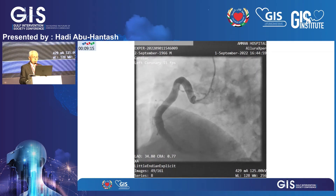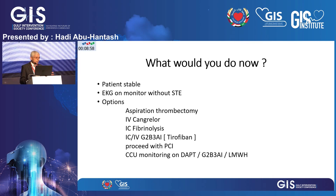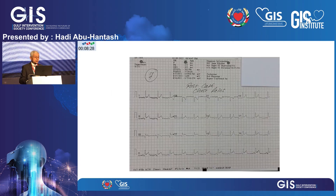At this point in the cath lab, the patient was stable with no more chest pain and the ST elevation had abated. I was weighing options: should I do aspiration thrombectomy? If I have IV cangrelor, should I use it? I see fibrinolysis as having a questionable evidence base in these cases. Should I use GP IIb/IIIa — intracoronary or IV? Should I proceed with PCI, knowing there is a high risk of no-reflow or slow flow? Or go with CCU monitoring on dual antiplatelet, GP IIb/IIIa, and low molecular weight heparin? That's what I elected to do, since the patient was stable.